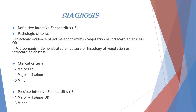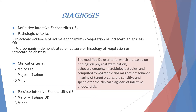Definitive pathological criteria include histologic evidence of acute endocarditis, vegetation or intracardiac abscess, or microorganism demonstrated in culture or histology of vegetation or intracardiac abscess. To make the definitive diagnosis, we need two major, or one major and three minor, or five minor criteria. For possible infective endocarditis, one major and one minor, or three minor criteria are needed. The modified Duke criteria, based on physical examination, echocardiography, microbiologic studies, and CT or MRI of target organs, are sensitive and specific for the clinical diagnosis.